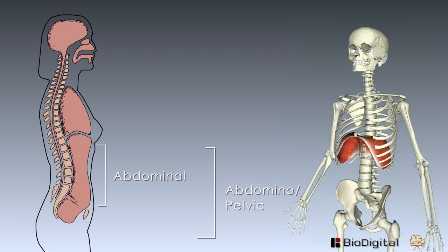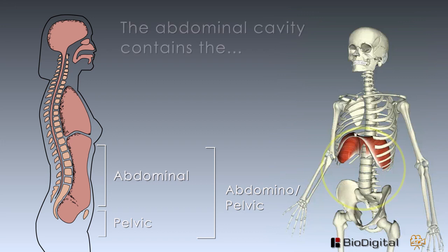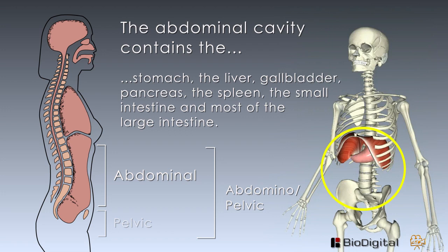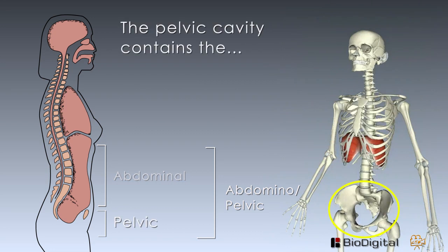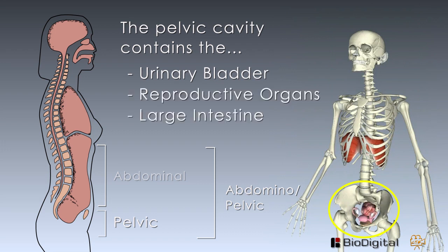The abdominal pelvic cavity is further divided into the abdominal cavity and the pelvic cavity. The upper part, or abdominal cavity, contains the stomach, the liver, gallbladder, pancreas, the spleen, the small intestine, and most of the large intestine. The lower portion, known as the pelvic cavity, contains the urinary bladder, the reproductive organs, and the last part of the large intestine.